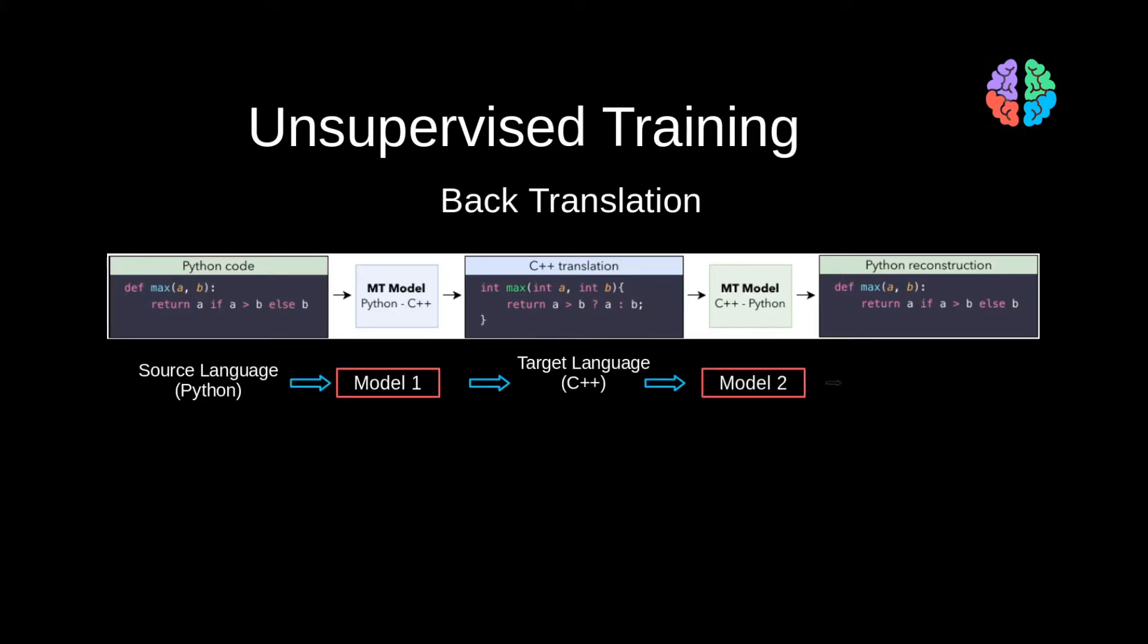Here, you first take a source language and translate it to a target language. In this case, from Python to C++. Then you use another model to translate from C++ back to Python. Now, this output will be noisy. By noisy, I mean the output may not be right 100% of the times. But that's okay.